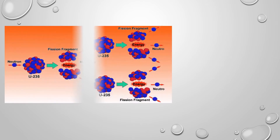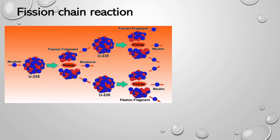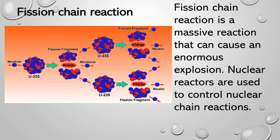In every nuclear fission reaction, at the end we get three neutrons. These three neutrons can be bombarded with other uranium atoms to start more nuclear fission reactions. So nuclear fission reaction creates a fission chain reaction, as described in the diagram. Starting with a single neutron, we can get a large number of neutrons. Nuclear fission reaction is a chain reaction that is not easy to control. It is a massive reaction that can cause an enormous explosion if uncontrolled, so nuclear reactors are used to control nuclear chain reactions.